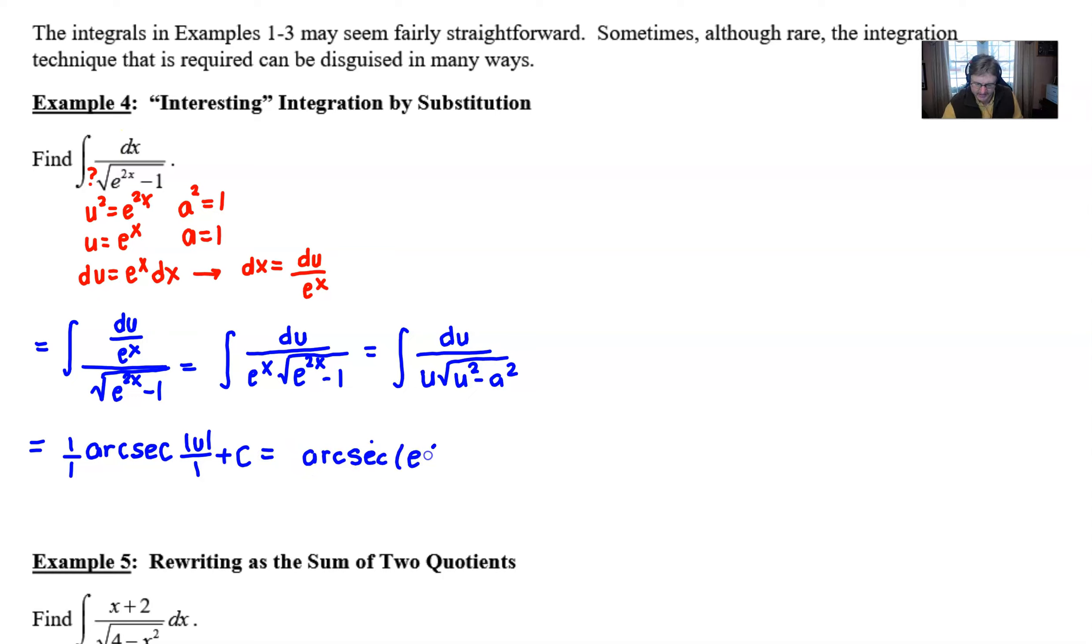I could just write the answer like this. I could get by without writing absolute values around e to the x because e to the x is always going to be positive.